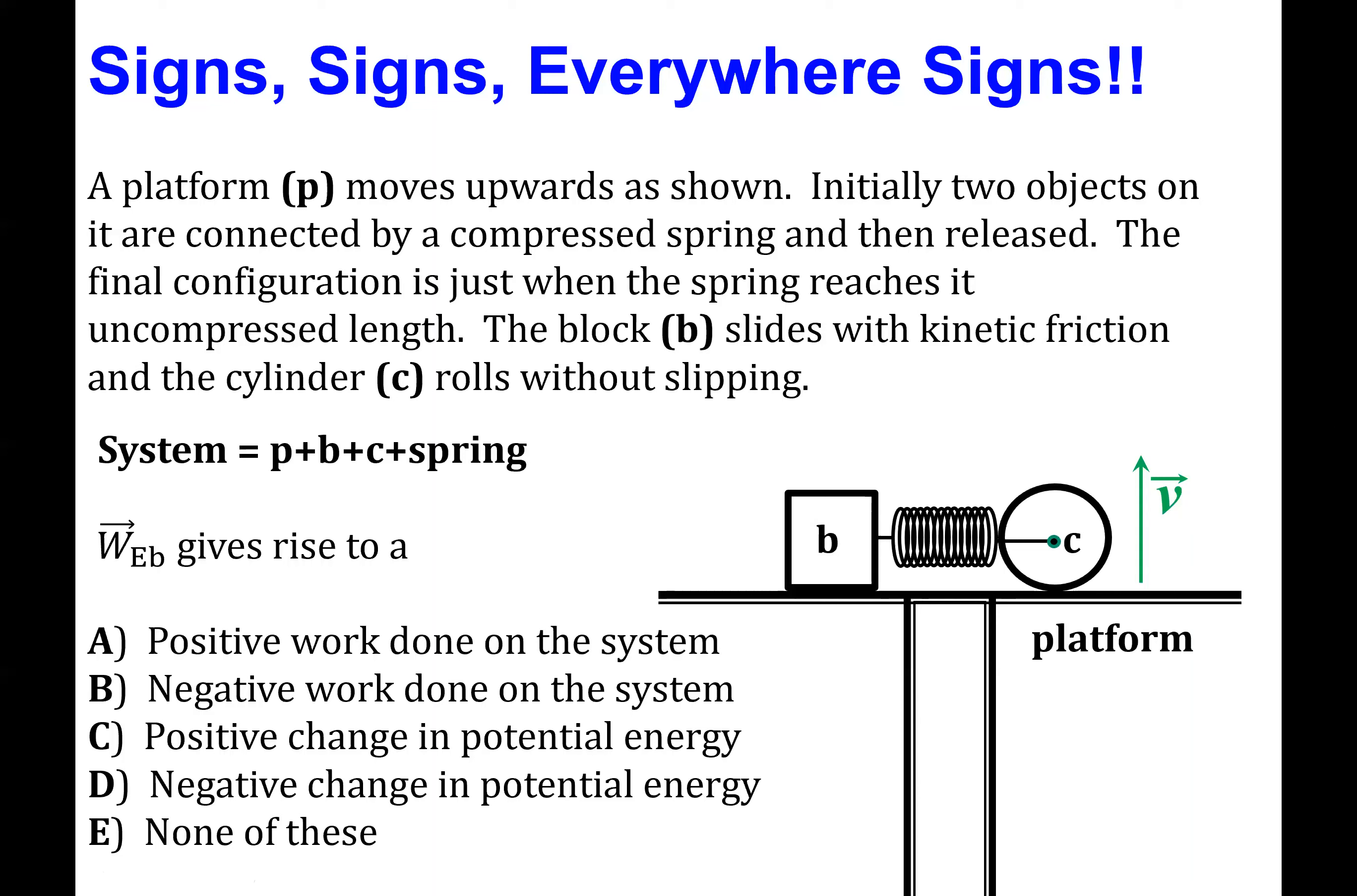Let's now return to the problem of characterizing the effect of the weight of block B on the system. And the first thing we have to do is realize that the force of gravity, or the Earth acting on block B, is an external force to the system. And because of that, it's going to do work on the system.